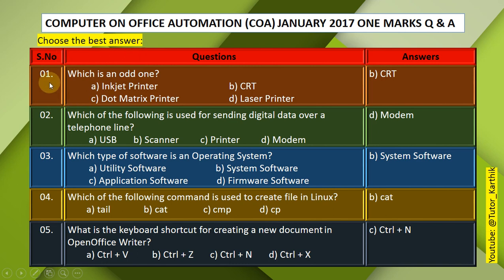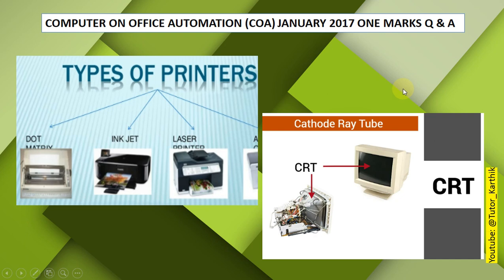Choose the best answer. Question 1: Which is the odd one out? A. Inkjet Printer, B. CRT, C. Dot Matrix Printer, D. Laser Printer. The correct answer is B — CRT. Inkjet, dot matrix, and laser are all types of printers, while CRT is a type of monitor (Cathode Ray Tube).